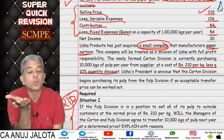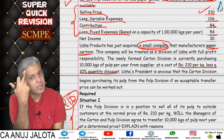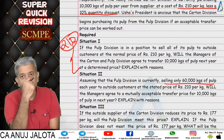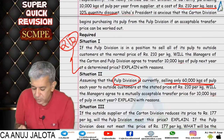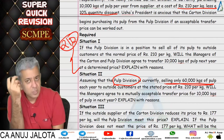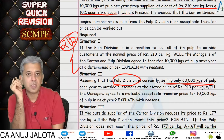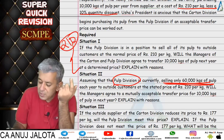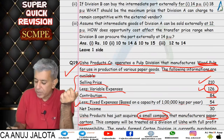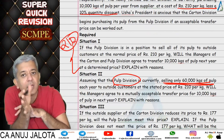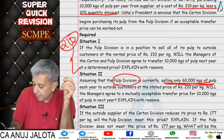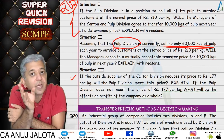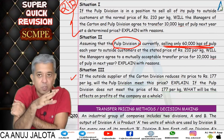Situation 2: first division only sells 60,000 units in the market against a capacity of 1,00,000 units — so it has 40,000 units of spare capacity. In this case, relevant cost for the first division is only variable cost = 126 (no opportunity cost). Second division won't pay more than 189. So a deal is possible in the range of 126 to 189. Situation 3 is similar to situation 2 — if the market price falls further to 177, the range for negotiation becomes 126 to 177.